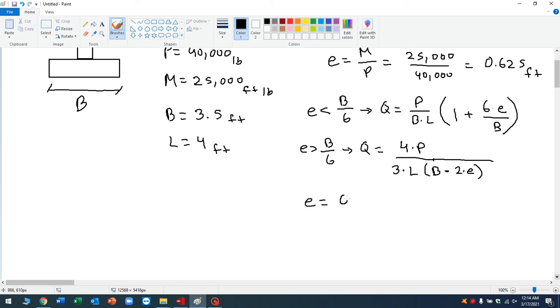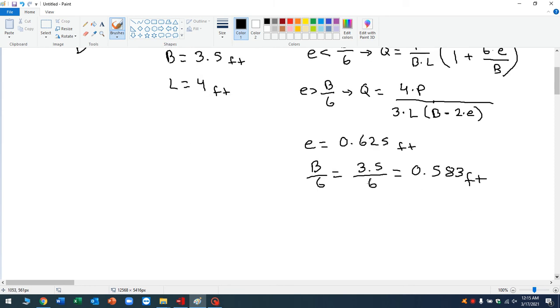E equals 0.625 feet, right, which we found earlier. What is B divided by six? So the base is going to be 3.5 feet divided by six. What is that? Let's solve for that. 0.583 feet. All right. So it looks like the E is actually greater than B divided by six, right?